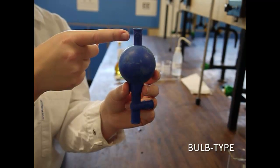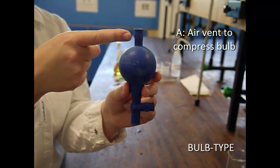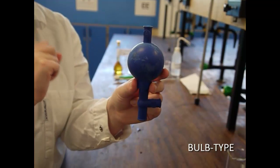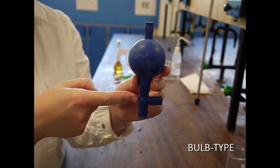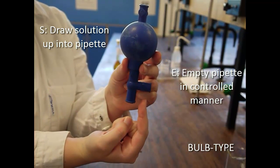To use the bulb type pipette filler, hold valve A and squeeze the bulb to exclude the air. Once the pipette is placed into the correct position in the bulb and the tip is below the surface of the liquid, hold S to draw the solution into the pipette. To empty the pipette in a controlled way, hold E.